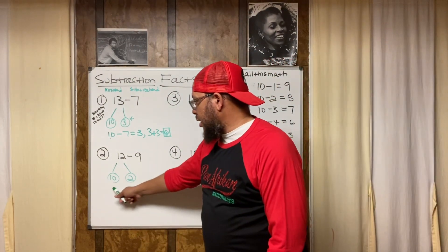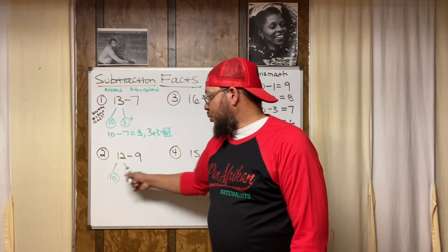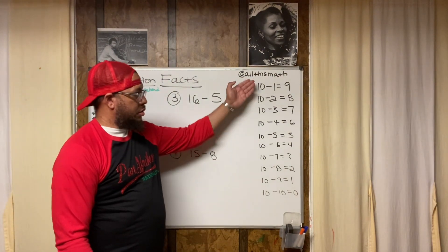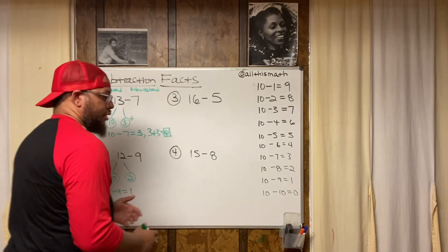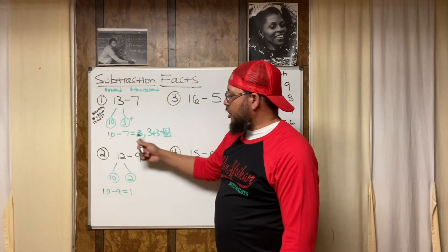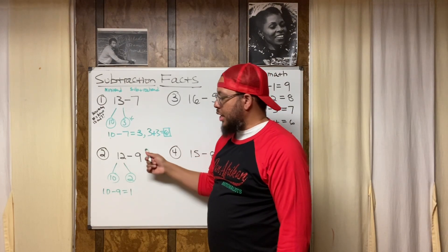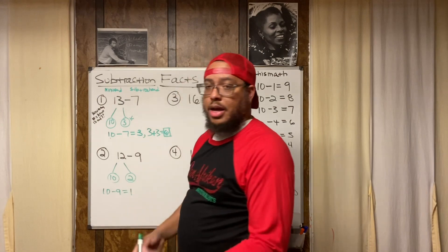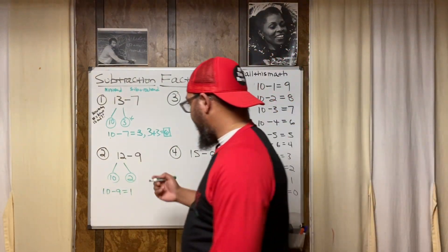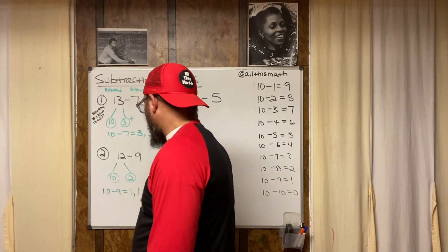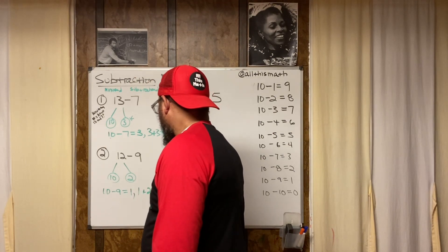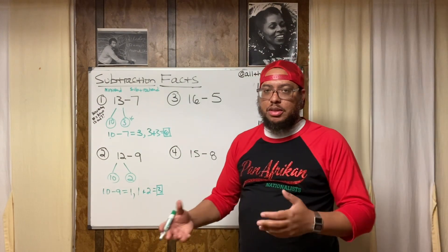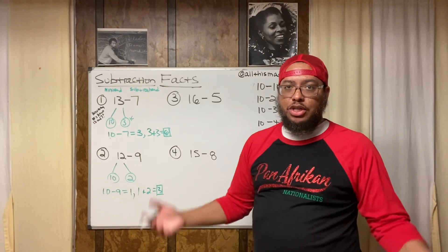We have 10 and 2. We find the difference between 10 and 9: 10 minus 9 is 1. We already know the difference between 12 and 10 is 2, since addition and subtraction are opposite operations. So we combine the differences: 1 plus 2 gives us 3. That's what I'm doing — combining the differences.